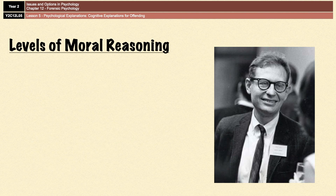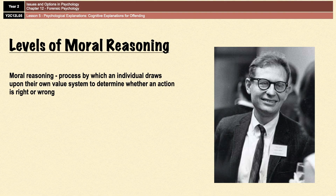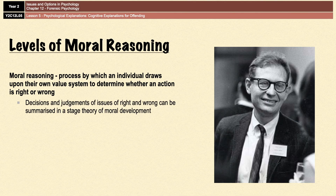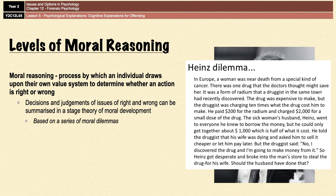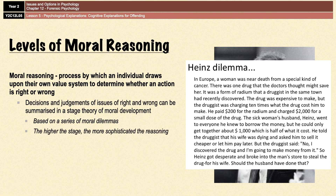Moral reasoning refers to the process by which an individual draws upon their own value system to determine whether an action is right or wrong. Lawrence Kohlberg attempted to create an objective measure for this process by identifying different levels of moral reasoning based on people's answers to moral dilemmas. People were asked to read the dilemma and then decide whether the action taken was right or wrong and justify their answers. The more sophisticated your reason, the higher your level of moral reasoning is.